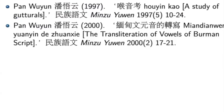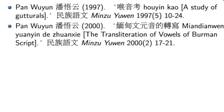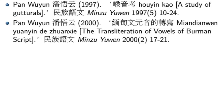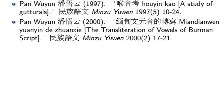We have Pan Wuyun — Pan is the last name, Wuyun is the first name. Then we have the Chinese characters and then the Pinyin, followed by the English translation in brackets: 'a study of gutturals.' Notice that there are single quotes around the whole article title. The journal is put in italics — if the journal is in English you put it in italics, and if the journal is in Chinese then you put the Pinyin in italics. Under no circumstance do you italicize Chinese characters — that's an important thing to keep in mind. Then we have the issue, the number, and the pages.